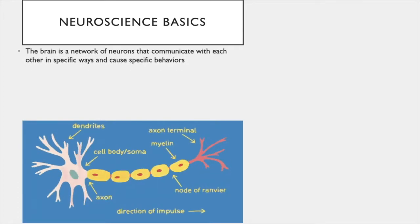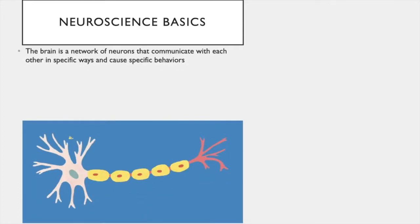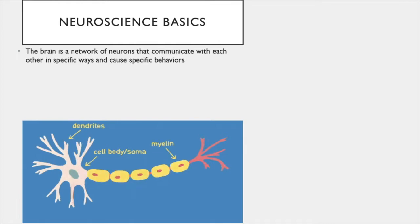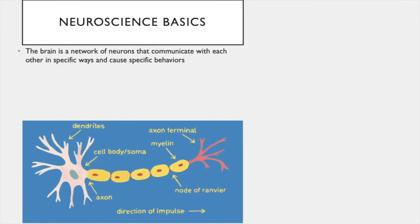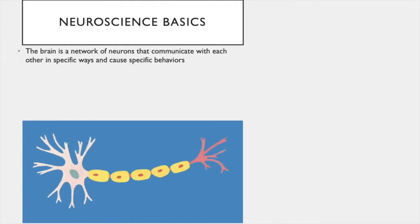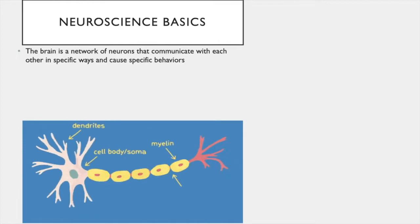To understand how optogenetics works, you need to know some of the neuroscience basics. The brain is a network of neurons that communicate with each other in specific ways and cause specific behaviors. The image below shows the basic anatomy of a neuron. Neurons receive signals from other neurons at their dendrites. They have cell bodies which contain their nucleus and a long extension called an axon. At the end of the axon is an axon terminal which releases neurotransmitters onto the dendrites of other cells.